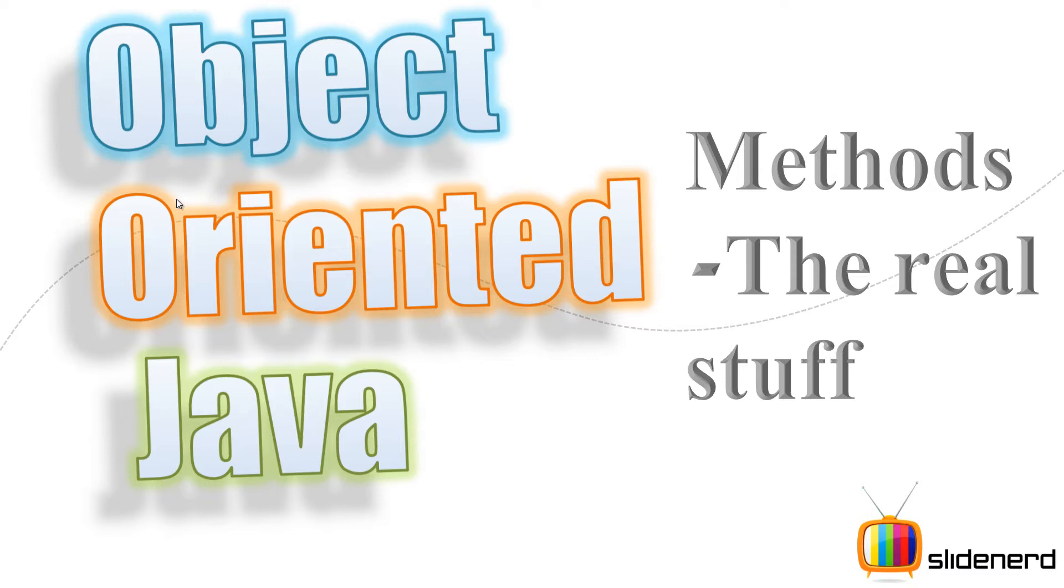But here we are going to talk about the technical terms behind methods, like the formal parameter list, method header, kind of stuff. And then we are going to take a short look at the method call stack, which means what happens when a method gets called. So first let's talk about the structure of a method.